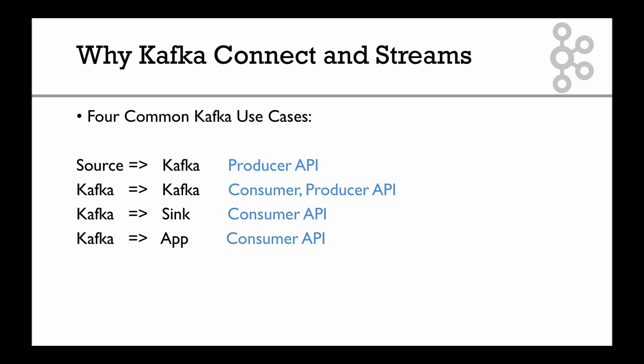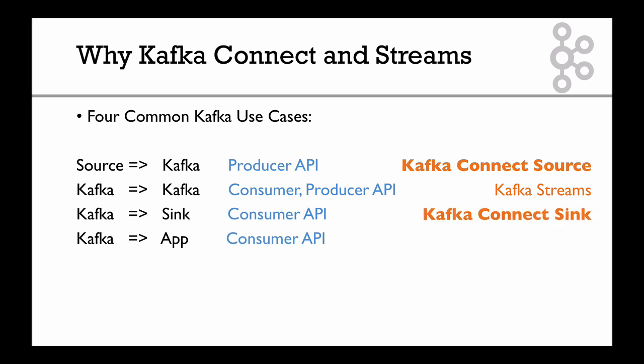So Kafka Connect — where does it fit? Kafka Connect Source API fits on the first case: it allows you to easily have a source and put all its data into Kafka. Then Kafka Streams serves the middle purpose, to do transformations on Kafka topics. Kafka Connect Sink serves the third purpose, getting data out of Kafka wherever you want. And for the last use case, the consumer API is still great, so we keep it that way.